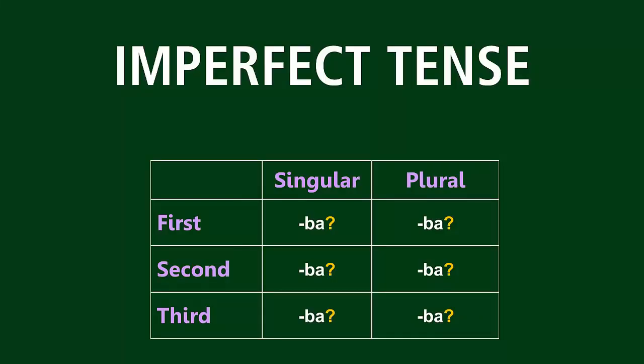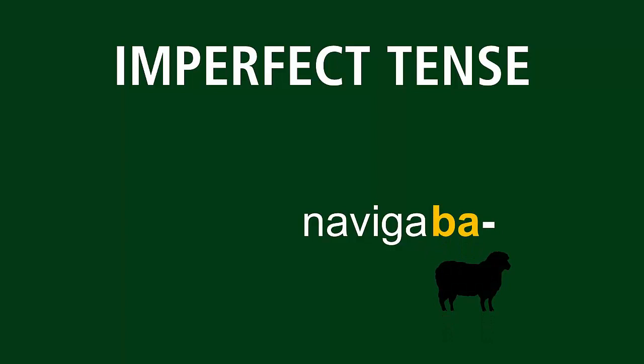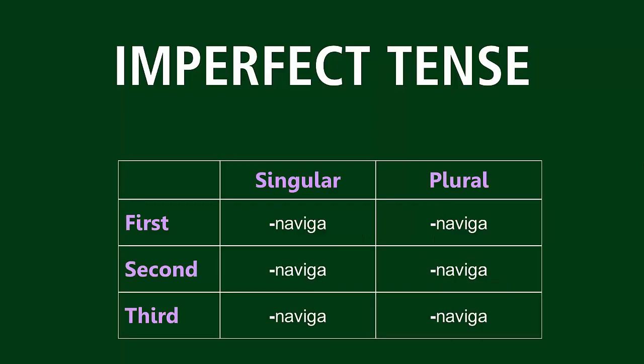At the end of the last lesson, I challenged you to try to follow the steps we discussed to figure out the imperfect tense endings on your own. So let's see how that went. Remember, the first thing you had to do was find your present stem. After that was the sheep parade. And you just added the B-A onto the stem for first, second, and third person, singular and plural.